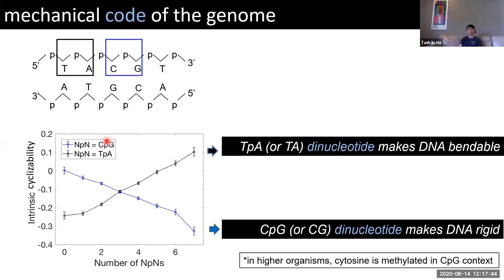What we did was measure many, many different sequences and ask: if you look at 50 base pair sequences that have 0, 1, 2, 3, 4, 5, 6, or 7 TpA or TA dinucleotides, what are their average bendability or cyclizability? It turns out if you have more TpA dinucleotides, DNA becomes more bendable, as shown in the black line. In contrast, if you have more CpG dinucleotides, DNA becomes more rigid. These are pretty strong effects that just pop out.